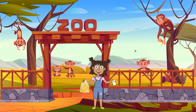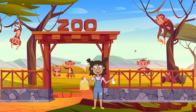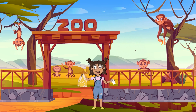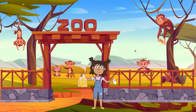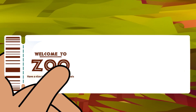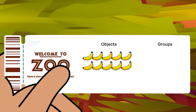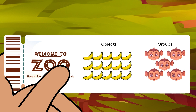There are five monkeys at the zoo, and a bag of 15 bananas for the monkeys to share equally. How many bananas does each monkey get? What are the objects, and what are the groups? The bananas are the objects, and the monkeys are the groups.